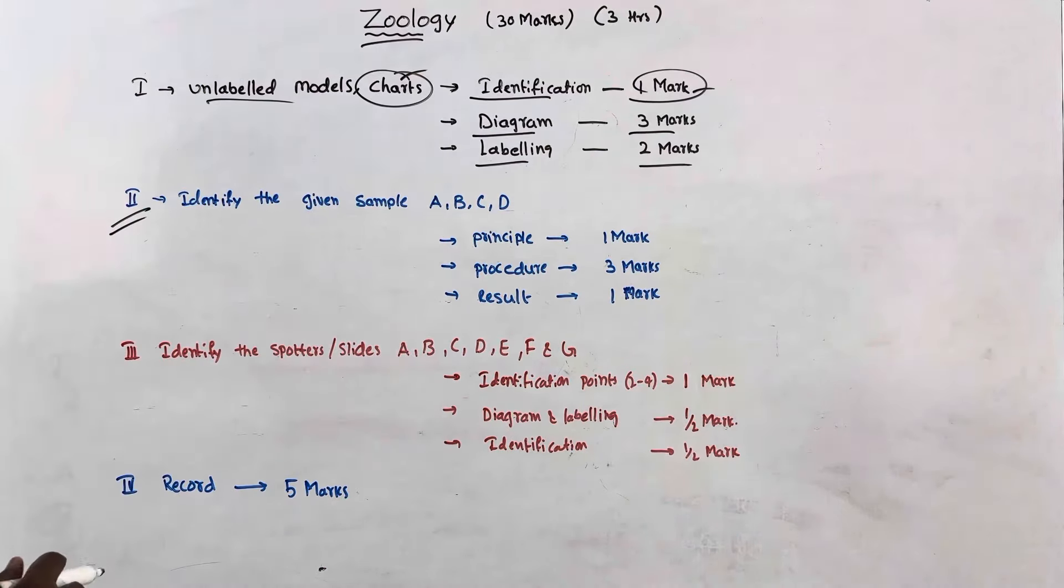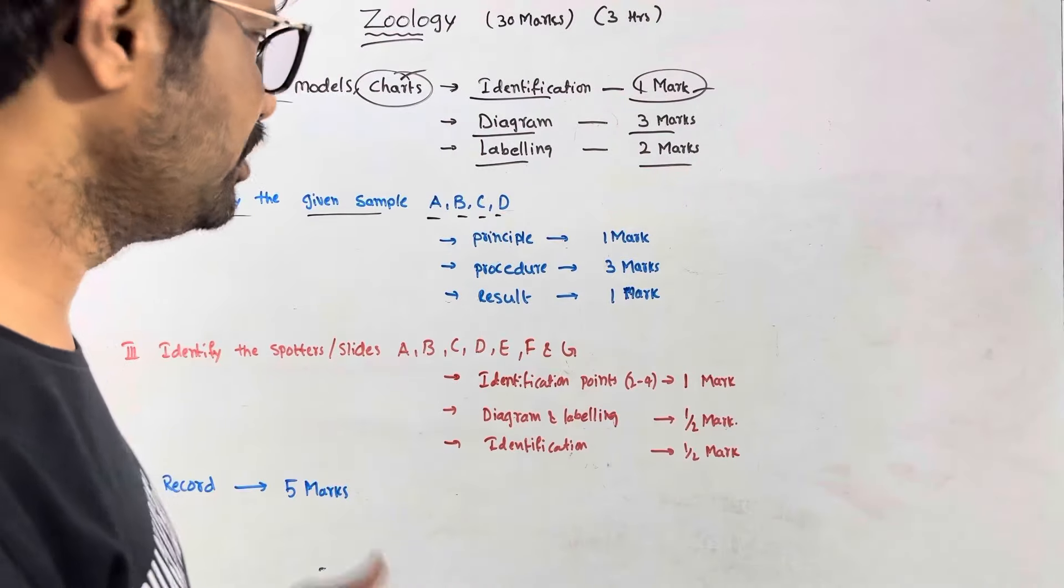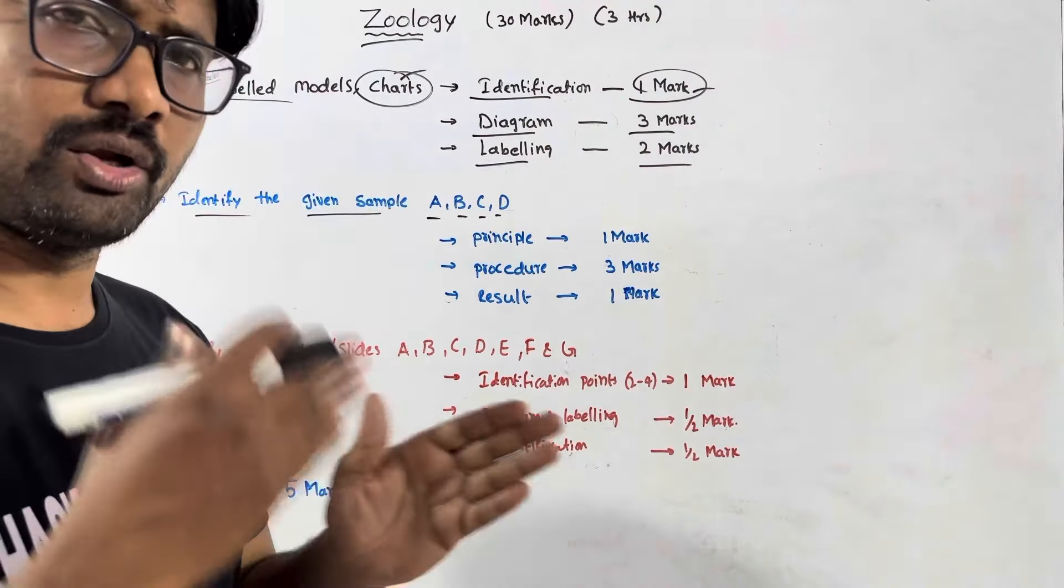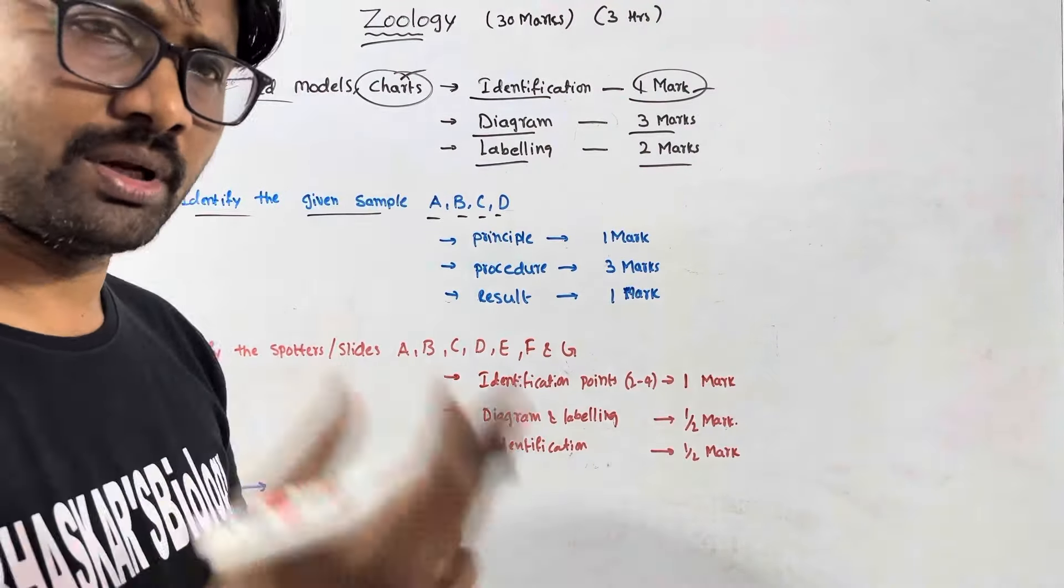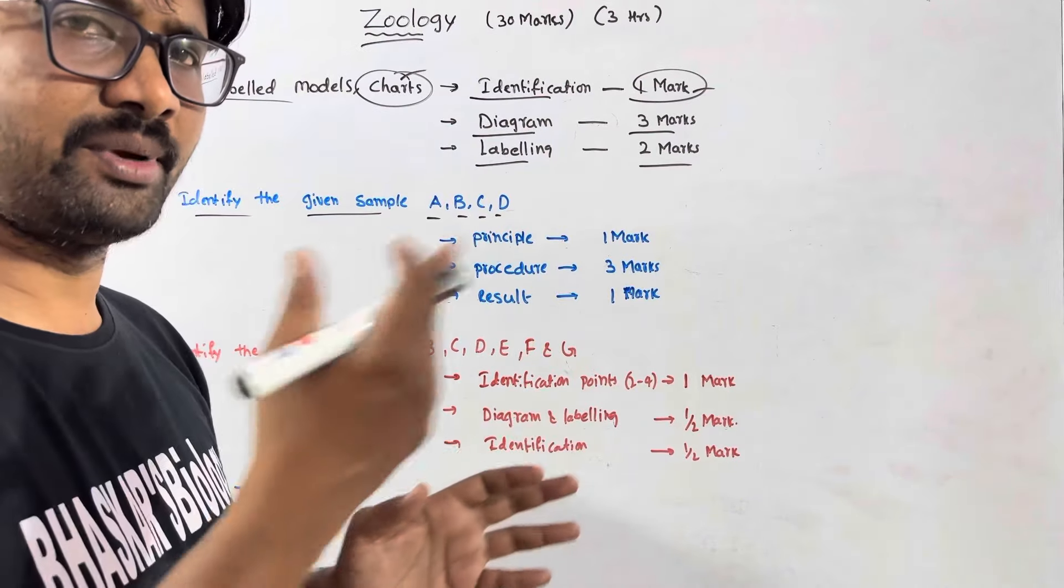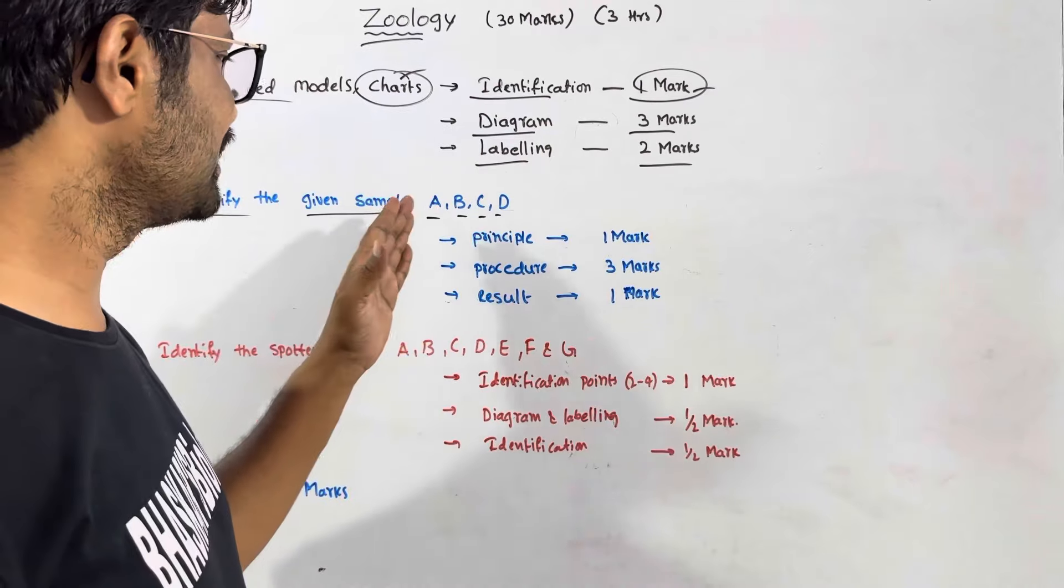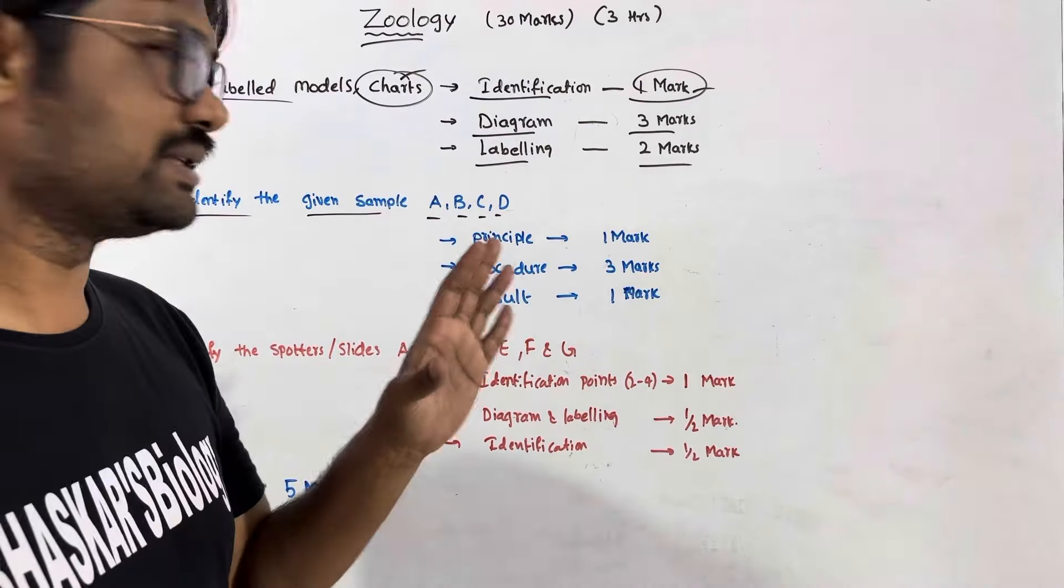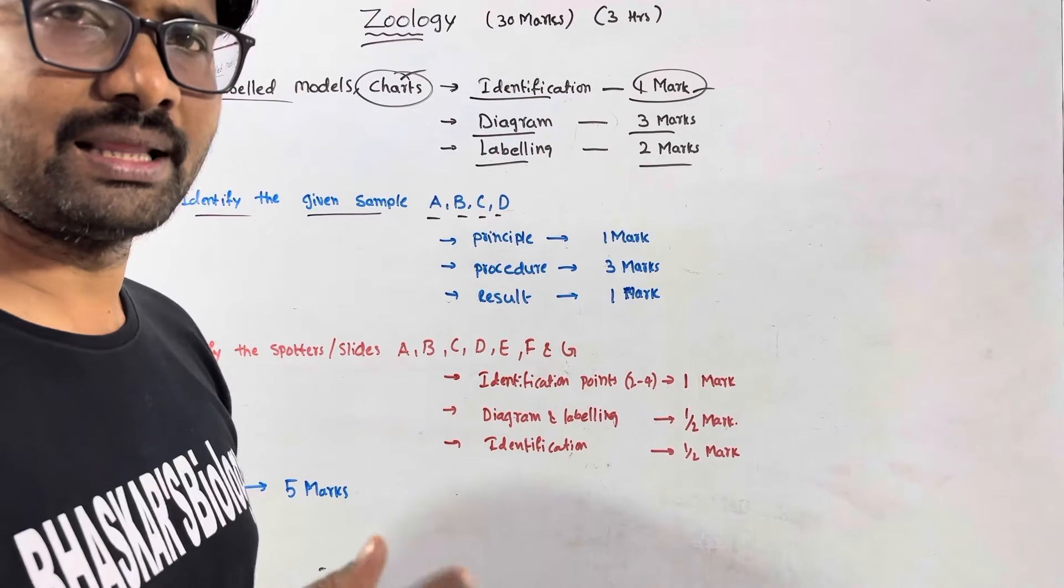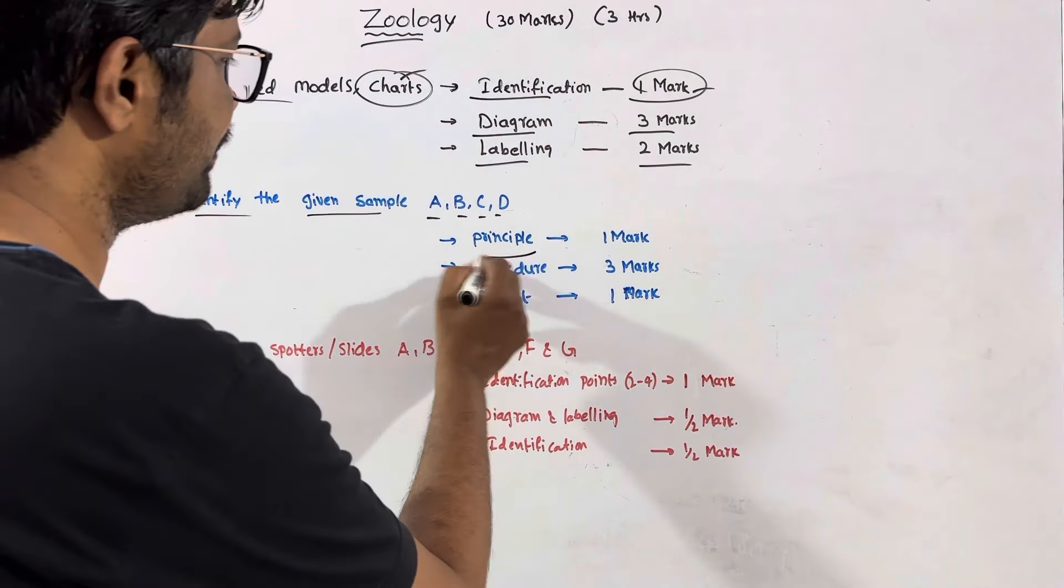Second section, number 2: Identify the given sample A, B, C, D. What is the sugar? For example, glucose test. In glucose test, there is A, B, C, D. In one sample, there is a high amount of sugar. In another sample, there is a low amount of sugar. If you test the percentage of your sample, you can see that. From the A, B, C, D samples, you identify which one has sugar. Then it can be 1 or 2 marks.